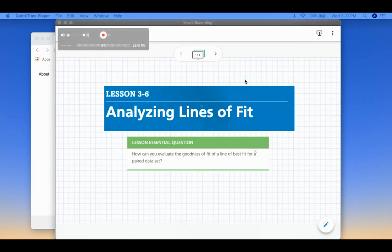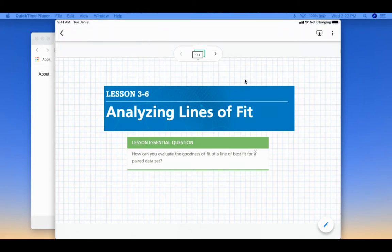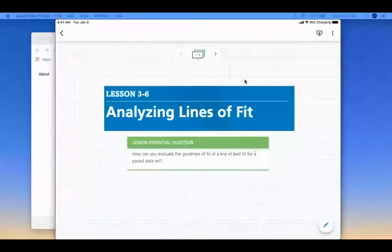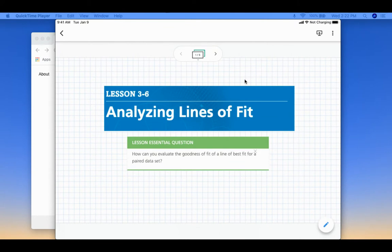Okay, so this video is a little bit different because I want to be able to show you how you can use the Desmos graphing calculator on the computer to do some of these linear regression problems. So this is lesson 3-6 which is analyzing lines of fit. Our essential question is how can you evaluate the goodness of fit of a line of best fit for a paired data set?